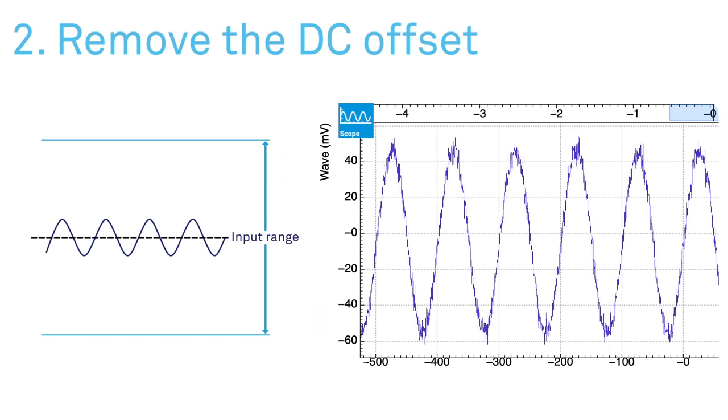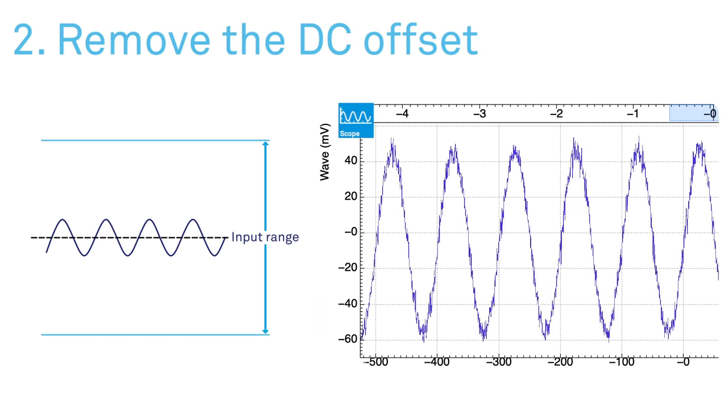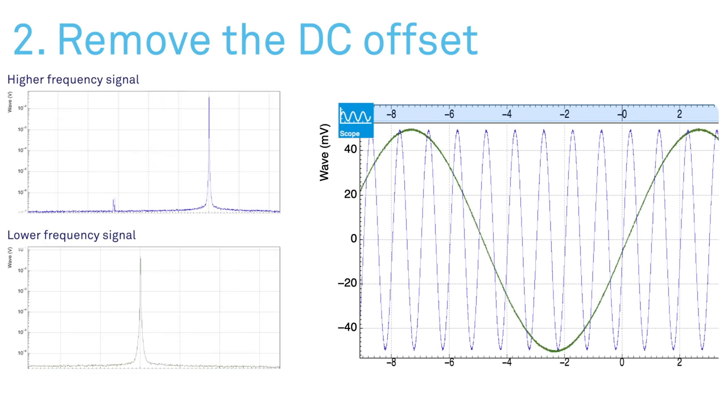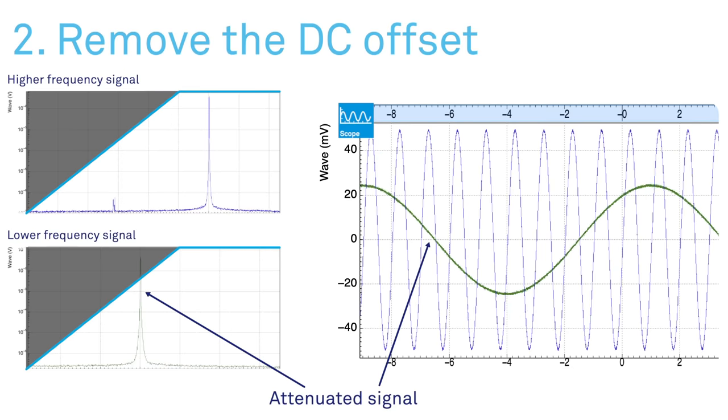Setting the input to AC coupling adds a high-pass filter on the input path that removes the DC offset. The cut-off frequency of this filter is different for each lock-in model, so ensure that your signal's frequency is high enough to avoid attenuation.